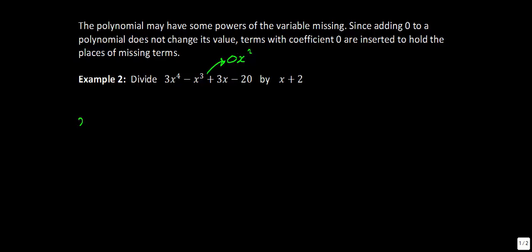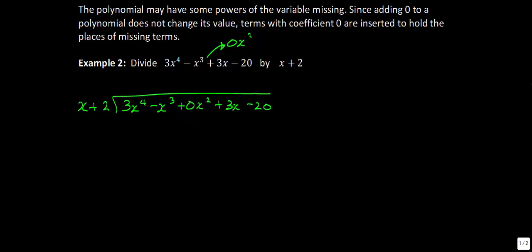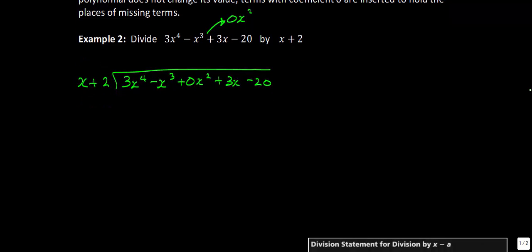So when we set this one up, when we have our x plus 2 being divided into our polynomial, we'll have 3x to the 4th minus x cubed, and then we're going to put in that 0x squared plus 3x minus 20. This would be a good time for you to maybe pause the video and try this example on your own, and then compare to see if you had the same answer.